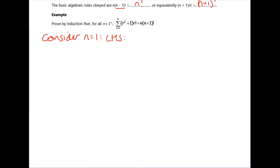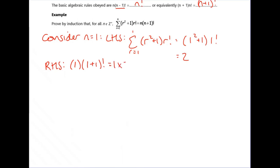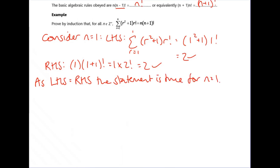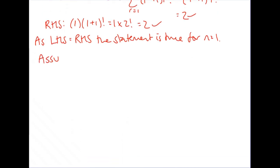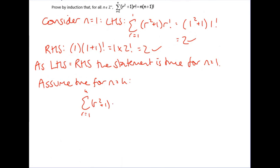First, consider n equals 1. Substitute it into the left hand side: subbing in r equals 1 gives 1 squared plus 1 times 1 factorial. 1 factorial is 1, and 1 squared plus 1 is 2, so you get 2. For the right hand side, subbing in n equals 1 gives 1 times 2 factorial; 2 factorial is 2, so we also get 2. Left hand side equals right hand side, so the statement is true for n equals 1. Assume it's true for n equals k: the sum from 1 to k of (r² + 1) · r! equals k(k+1)!.